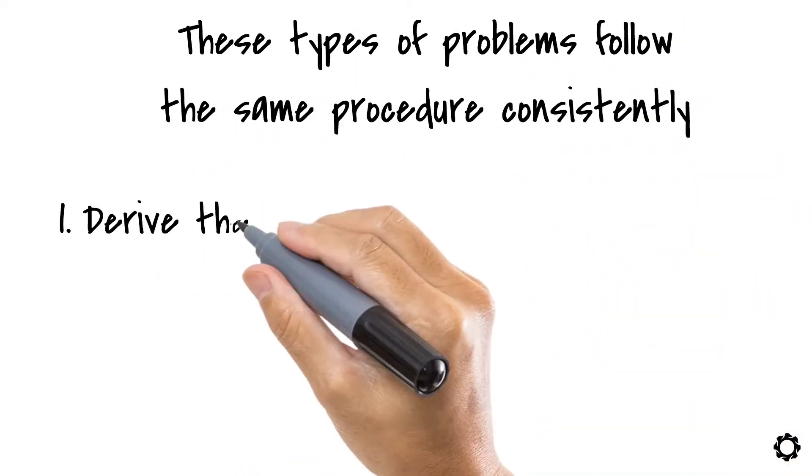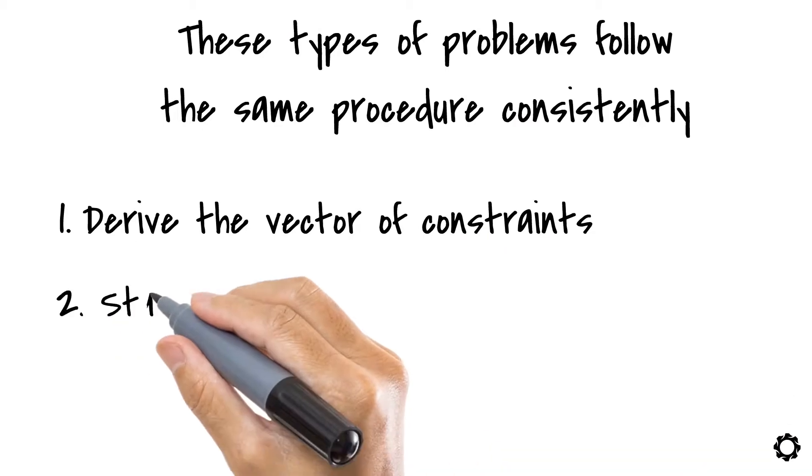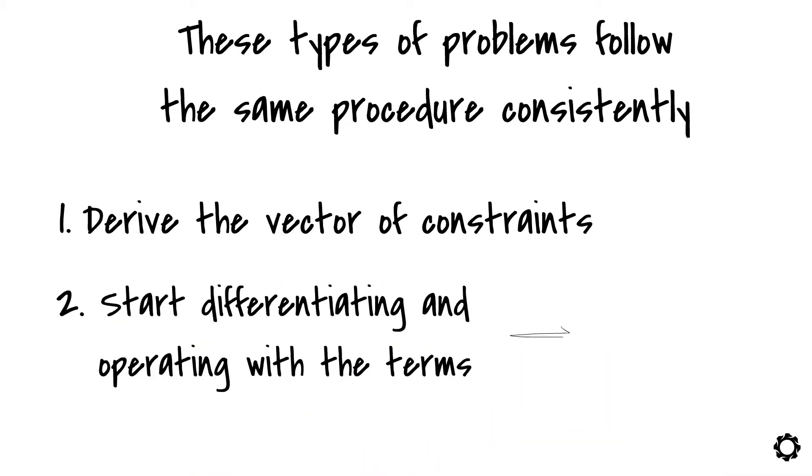First, you derive the vector of constraints. Then you start differentiating and operating with the terms according to the expressions for position, velocity, and acceleration.